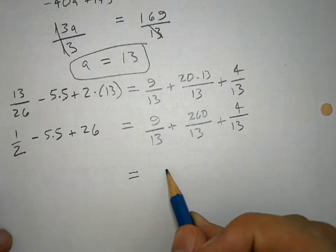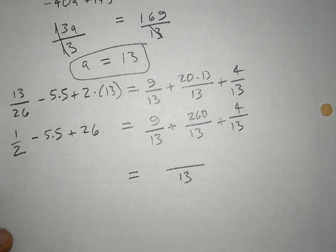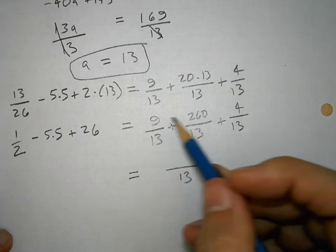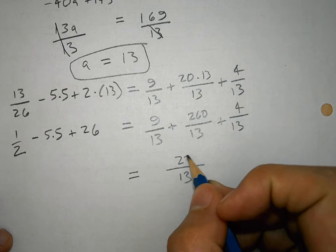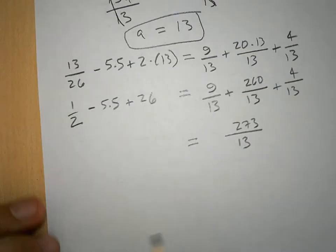Since these are all denominators 13, that just turns out to be 13. And then I have 9 plus 4 plus 260. I have 269. 273 over 13.